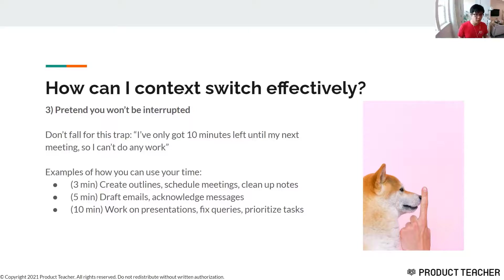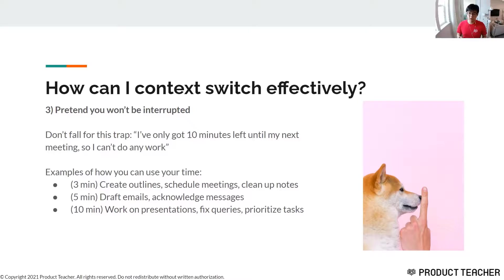As an example: if you've only got three minutes until your next work item, you can schedule a meeting, clean up your notes, or create outlines. If you've got five minutes, you can draft an email or let people know you've read their messages and when you plan to respond. If you've got ten minutes, you can work on a presentation, fix a query, or do some prioritization. All of these things start to build up over time — every three minutes here and there adds up to a meaningful chunk of productivity.